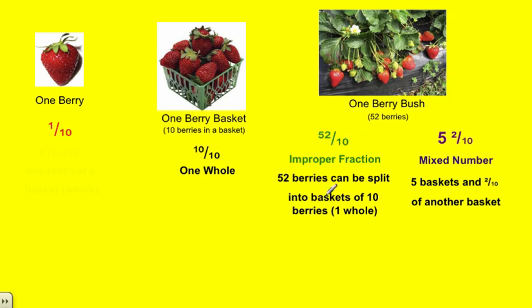So in an improper fraction, the total amount of berries we had became the numerator, and the denominator was how many berries we need to make a whole, which is 10. So in our improper fraction, you can see the numerator is more than the denominator.